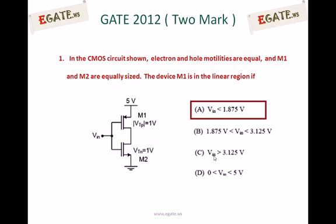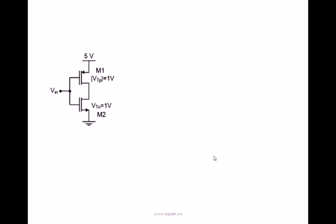Now look at the complete solution. This is the circuit given. And given muN is equal to muP and W by L ratio of M1 and M2 are same. And VTN is equal to VTP is equal to 1V. All they are given. That is nothing but M1 and M2 are perfectly matched.